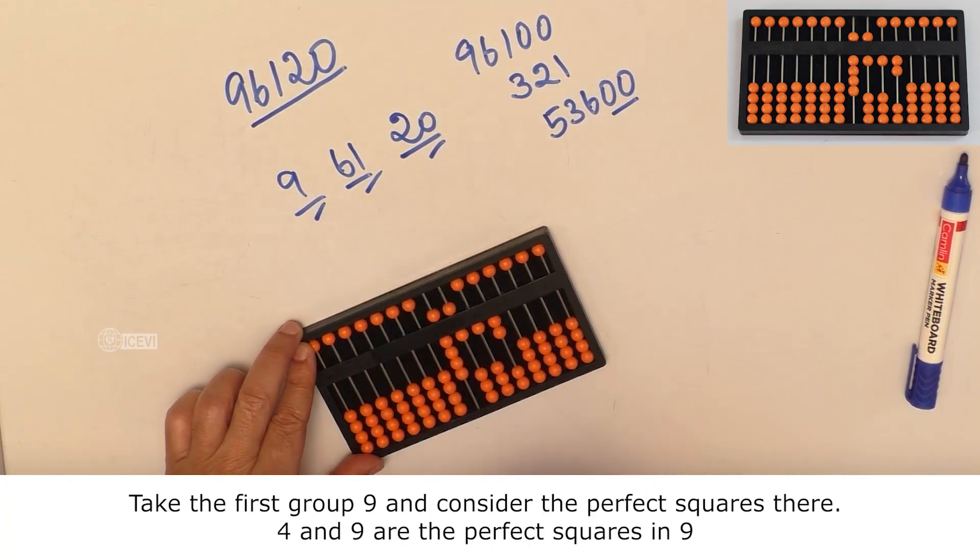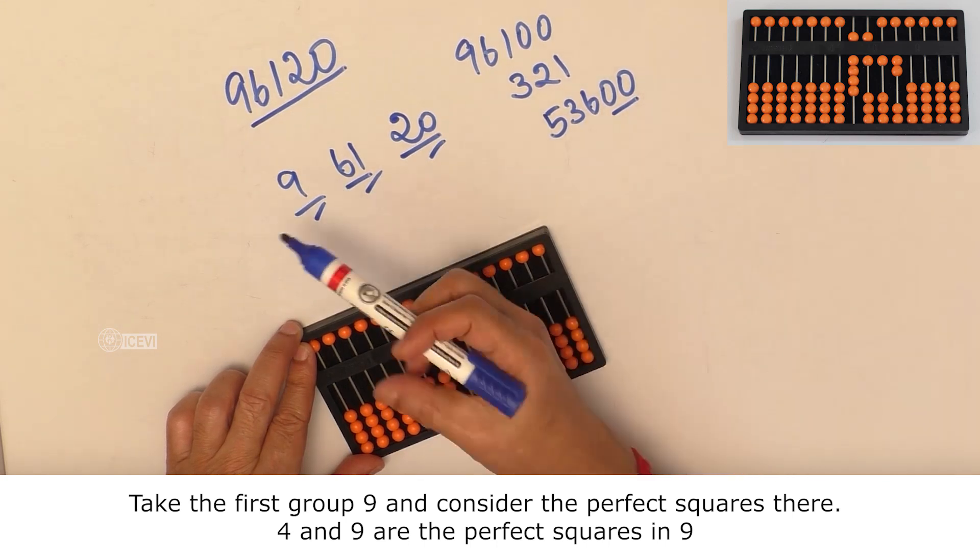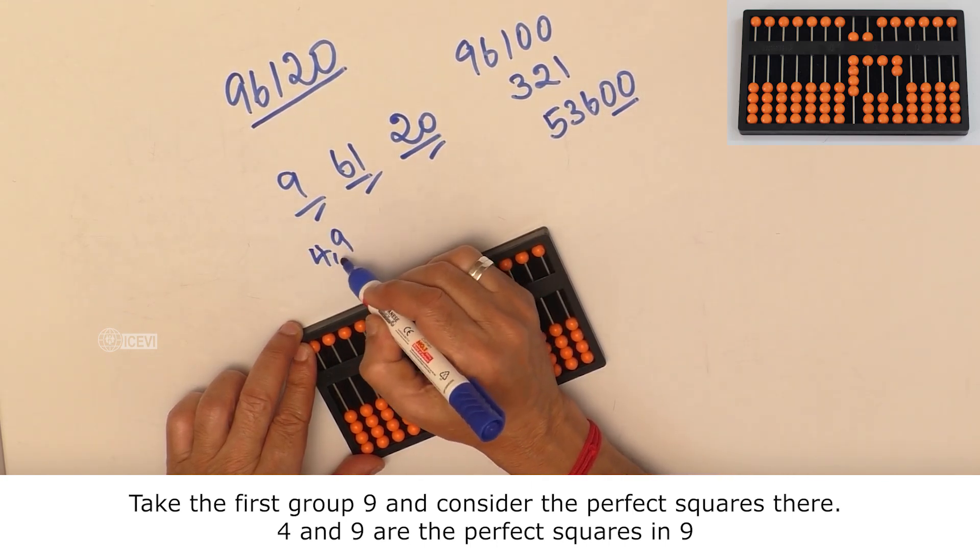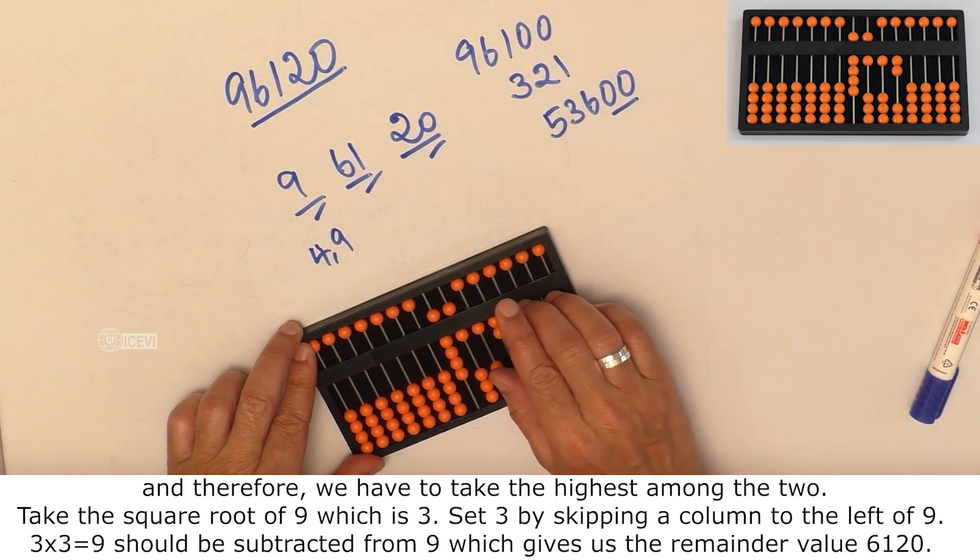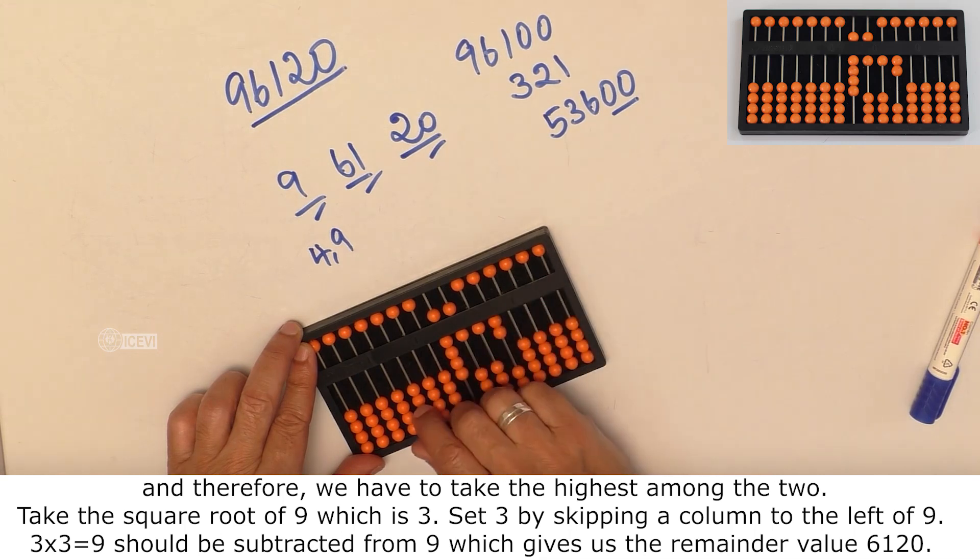Take the first group 9 and consider the perfect squares there. 4 and 9 are the two perfect squares in 9, and therefore, we have to take the highest among the two. Take the square root of 9, which is 3.